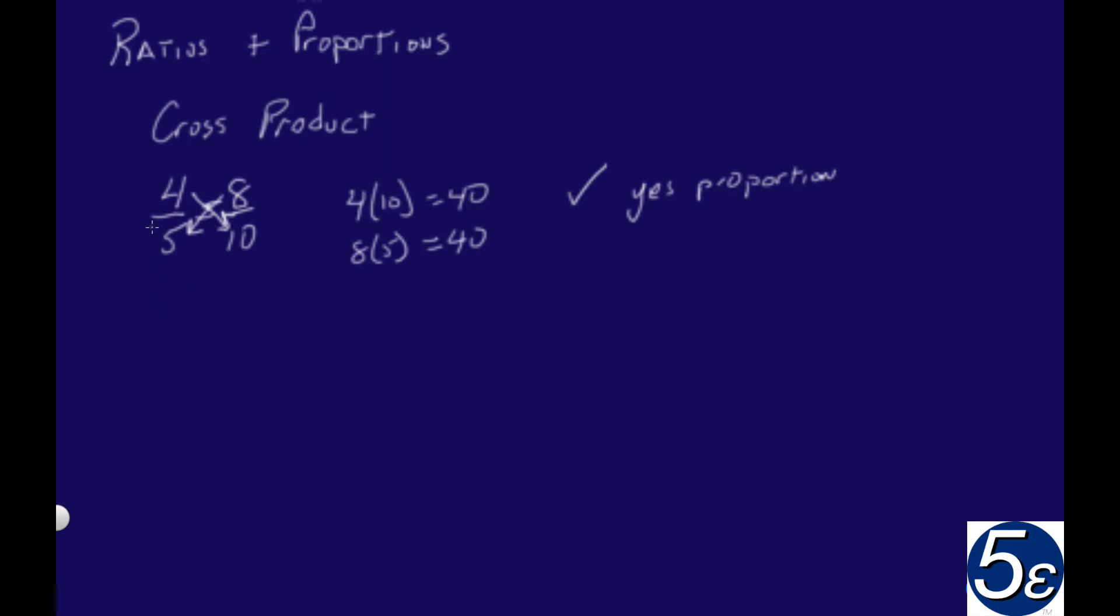So let's say we have 1 third equals 3 ninths. In this case, we're looking to see if this is a proportion. We will multiply 3 times 3, which would be this side, and we can multiply this diagonal as well, 1 times 9. We can see that both of them are equal to 9. So yes, this is a proportion as well.